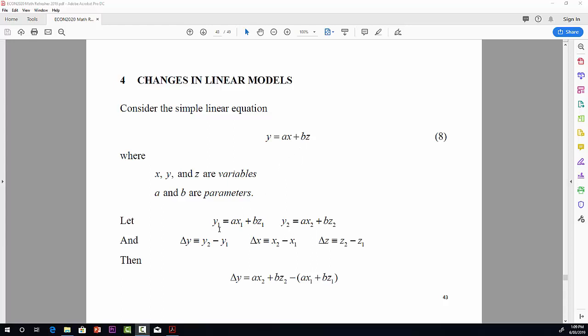Now, let y1 be defined as a times x1 plus b times z1. So we're considering y1 is what y is when x is equal to x1 and z is equal to z1. And we're also going to define y2 as being ax2 plus b times z2. So that's ax plus b times z, evaluated at x2 and z2.